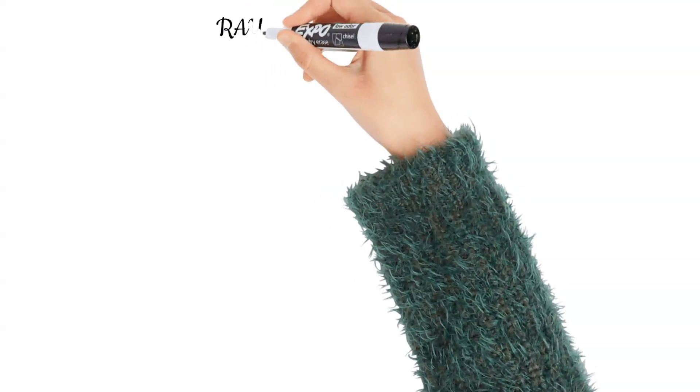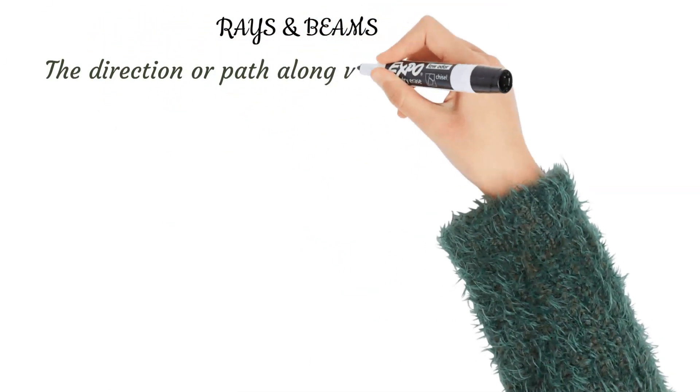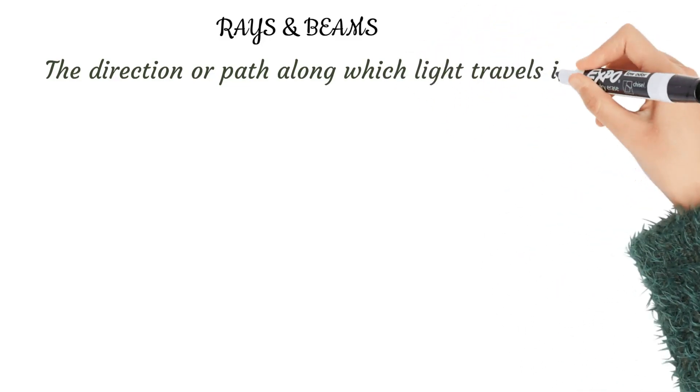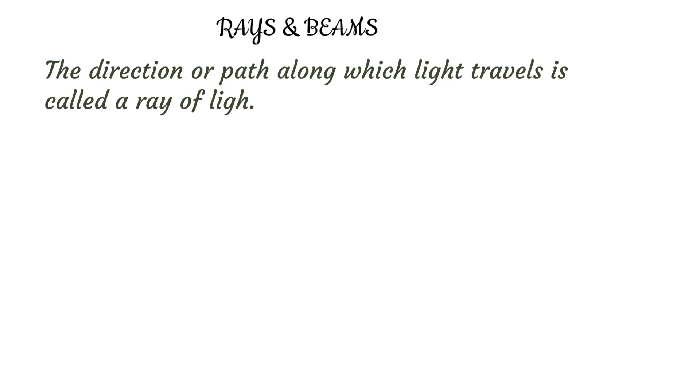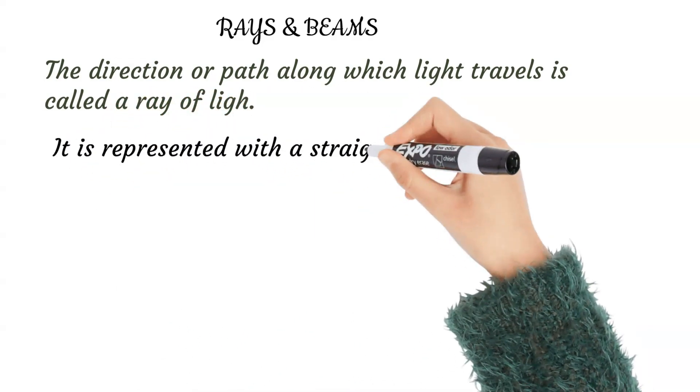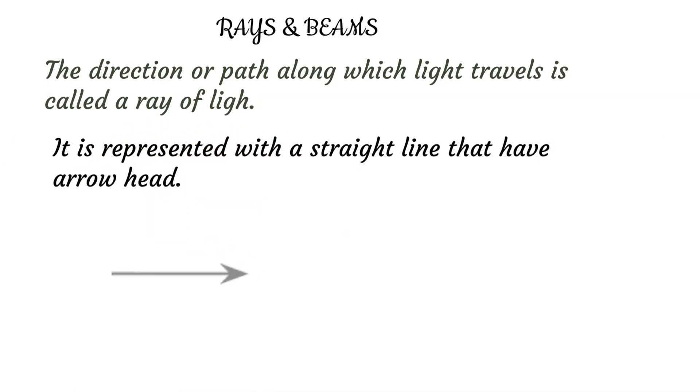Rays and beams of light: a direction or path along which light travels is called a ray of light. It is represented with a straight line that have arrowheads as shown below.